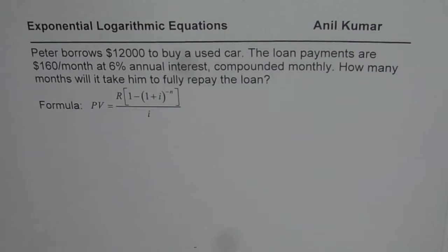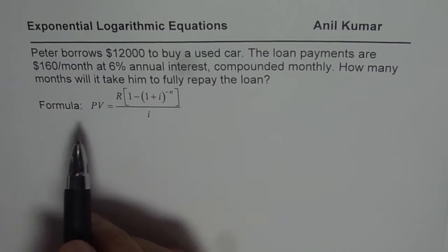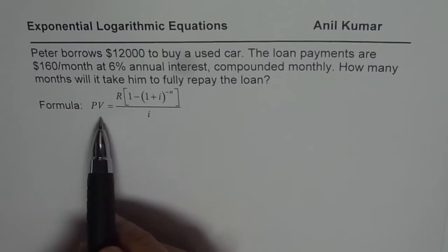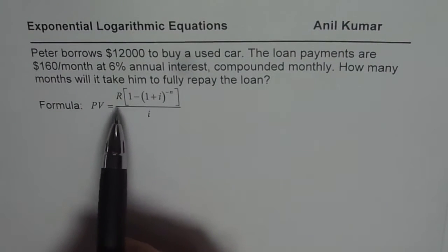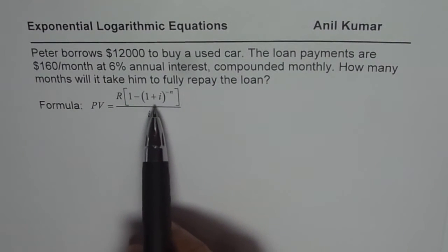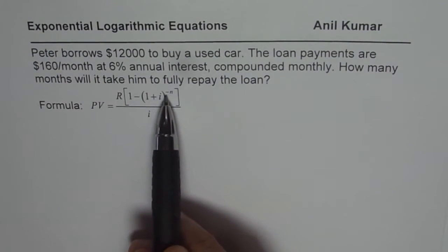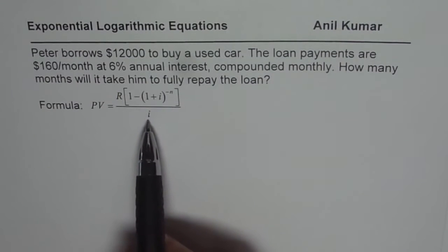The question here is: Peter borrows $12,000 to buy a used car. The loan payments are $160 per month at 6% annual interest compounded monthly. How many months will it take him to fully repay the loan? The formula is given to us: the present value equals monthly installments R times 1 minus (1 plus interest) to the power of minus N, divided by the interest itself.